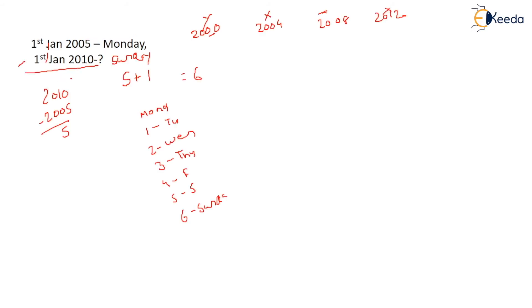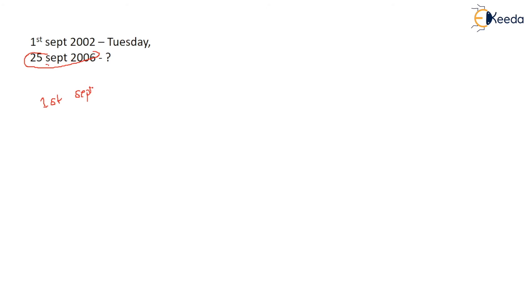Now the dates and months are both different. What you do is first come to the given date — 25 September 2006. Make the month the same: go to 1 September 2006 first. Subtract 2006 minus 2002 — 4 years remaining. How many leap years? Only one — 2004. Now you have to go from 1 September to 25 September.